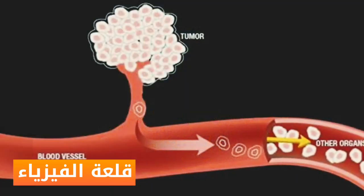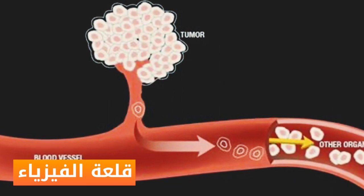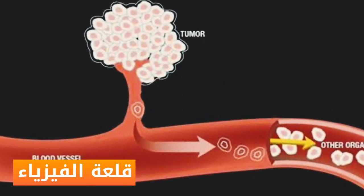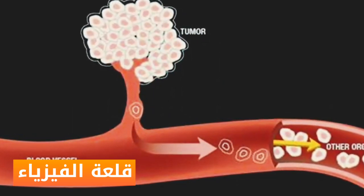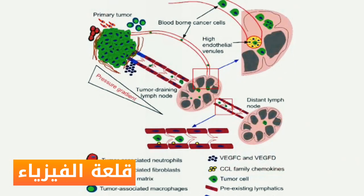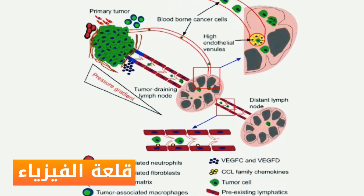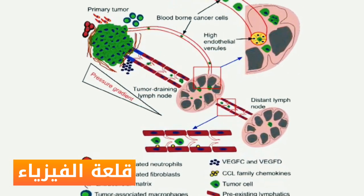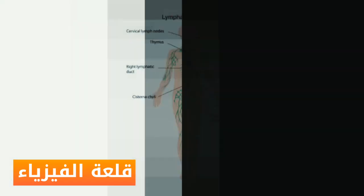Number two: hematogenous spread. This is when cancerous cells invade blood vessels. Number three: lymphatic spread. This spread occurs when cancer invades lymph nodes and travels to other parts of the body through the lymphatic system.